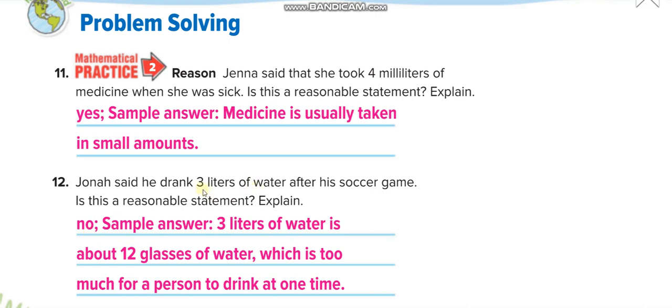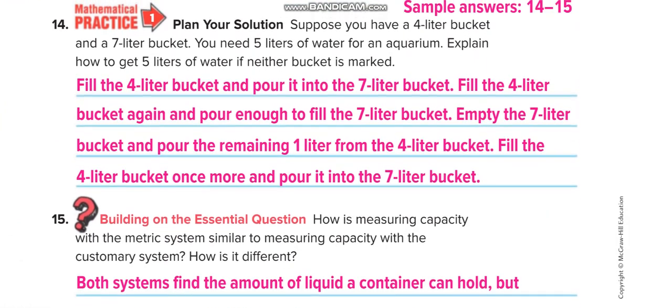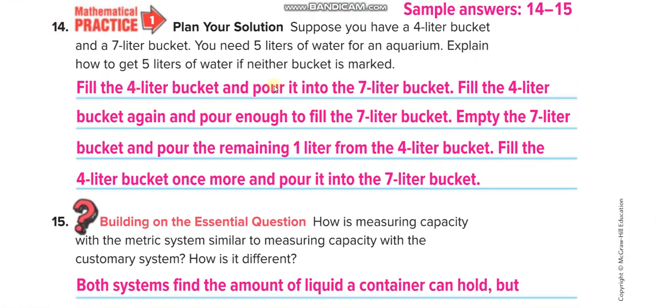This question 14 is very interesting. Suppose you have a four-liter bucket and a seven-liter bucket. You need five liters of water for an aquarium. Explain how to get five liters of water if neither bucket is marked. You have one four-liter bucket and the other one seven-liter bucket. Now how will you measure five liters of water with these two buckets?